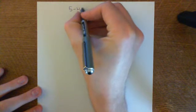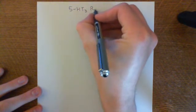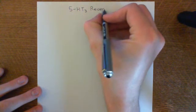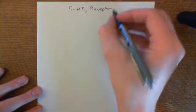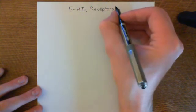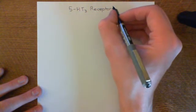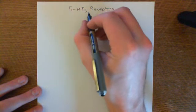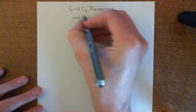Welcome to this next video in the playlist on cis-loop ligand-gated ion channels. In this video, we're going to talk about the involvement of the 5-HT3 receptors in depression. We're going to start off with a revision of the structure of the 5-HT3 receptors, then talk about their function and how they open in response to 5-HT, and then talk about depression and the involvement of 5-HT3 receptors in depression — an area that is still being researched and where the picture is quite incomplete.